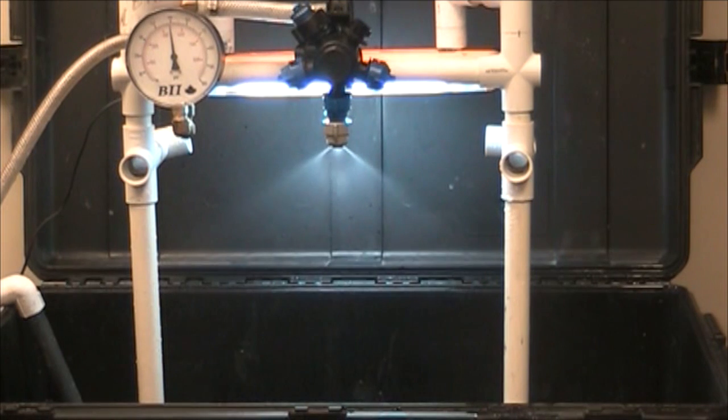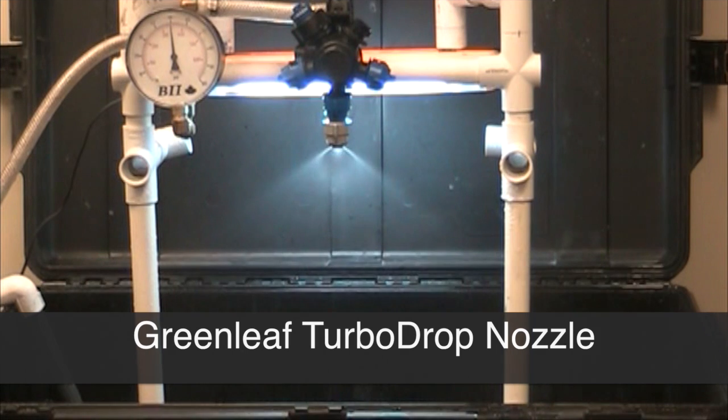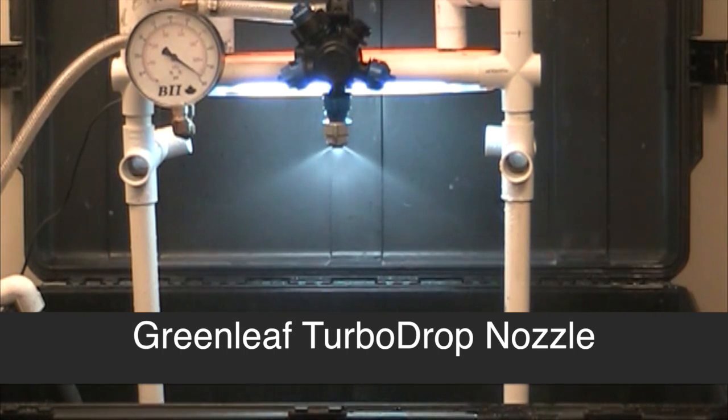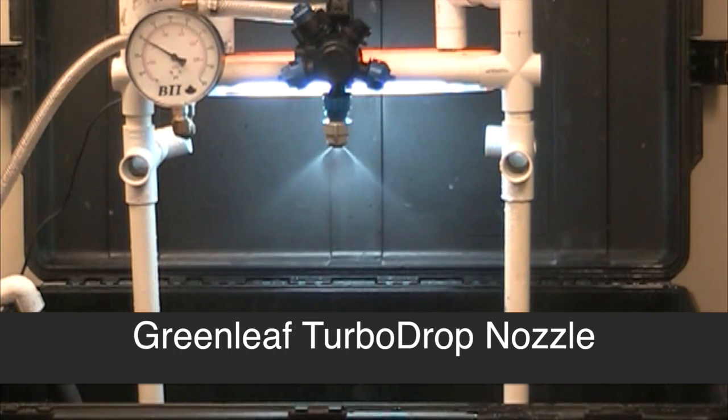This is one of the nozzles I didn't write on the board but I mentioned briefly. It's the Greenleaf TurboDrop, one of the original Low Drift Nozzles. It's a slight bit coarser and a little bit more money than the Greenleaf Air Mix which replaced it more or less, but it's still a very good nozzle. Operates nicely at higher pressures. It might have a little bit of a higher minimum pressure, but it'll probably go down to 30 PSI.